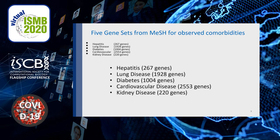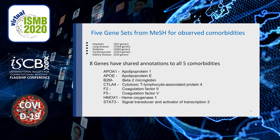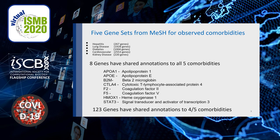We identified eight genes that are shared in all five comorbidities. These are the eight human genes, including things like apolipoprotein E, already associated with several diseases including Alzheimer's, and further down, heme oxygenase-1, associated with lung diseases and diabetes. In the total set, we also identified 123 genes that have shared annotations to four out of five of the comorbidities, which we hope to investigate more completely in the future.